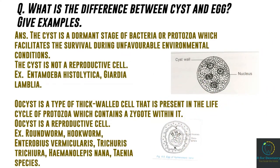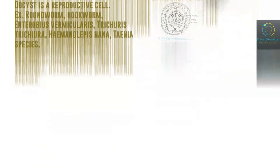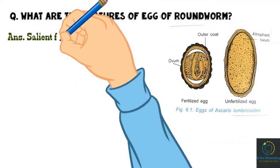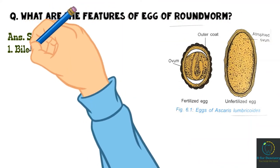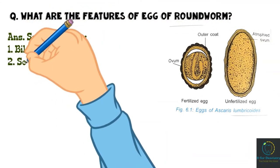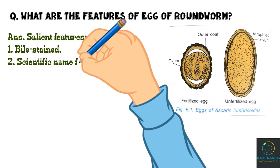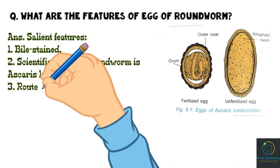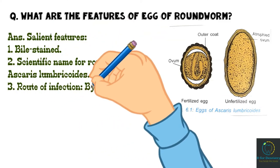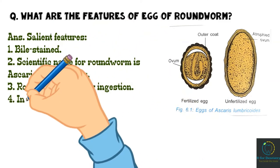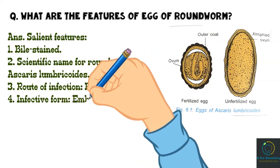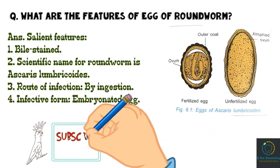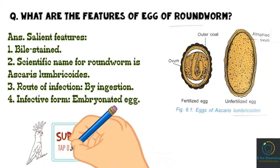What are the features of the egg of roundworm? Salient features: First, it is bile-stained. Scientific name of roundworm is Ascaris lumbricoides. Route of infection is by ingestion, and the infective form is the embryonated egg.